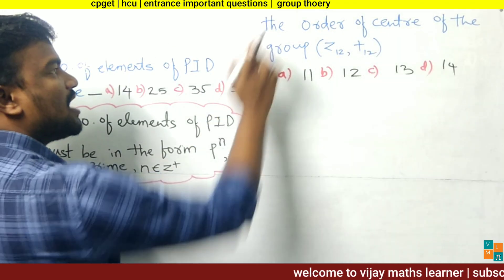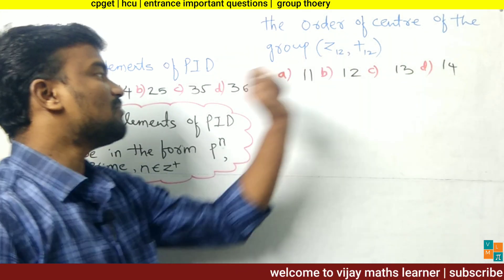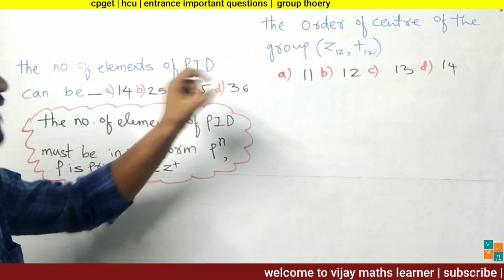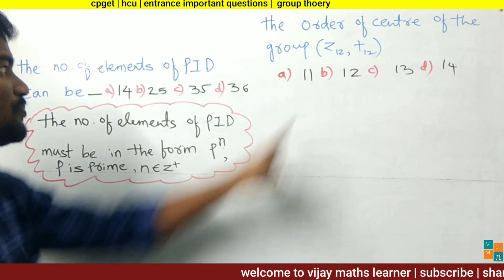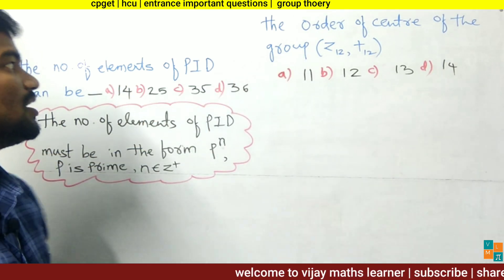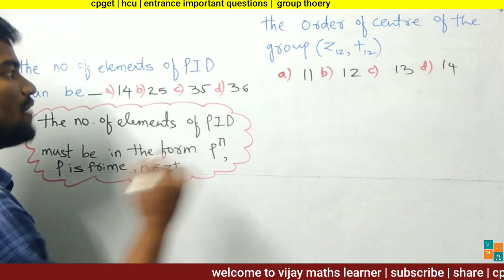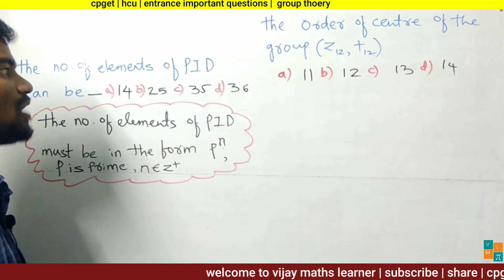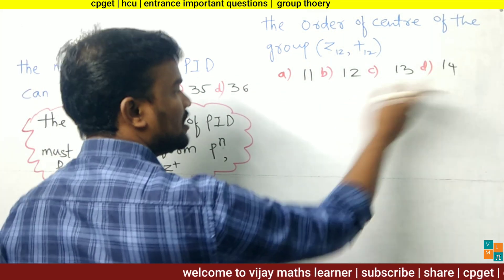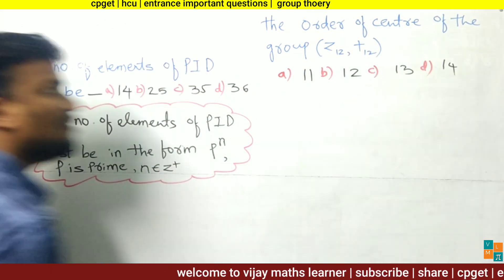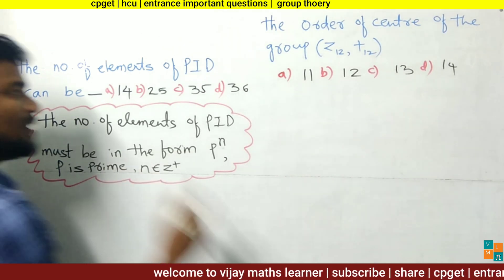Now see the second problem: find the order of the center of the group Z₁₂ with addition modulo 12. We have four options — option A is 11, option B is 12, option C is 13, option D is 14.